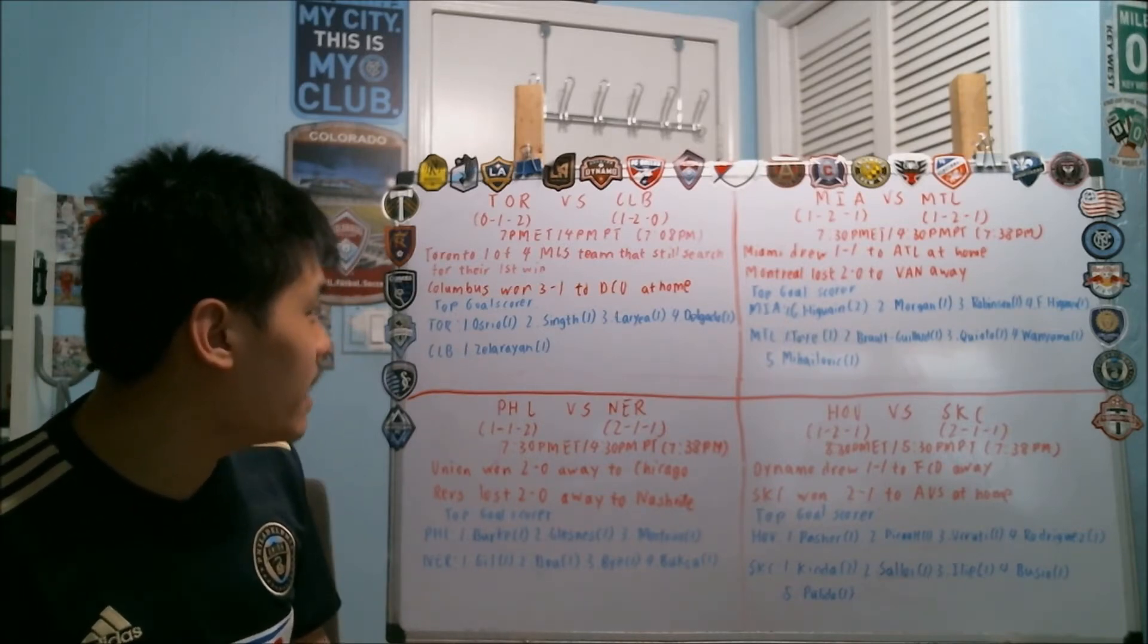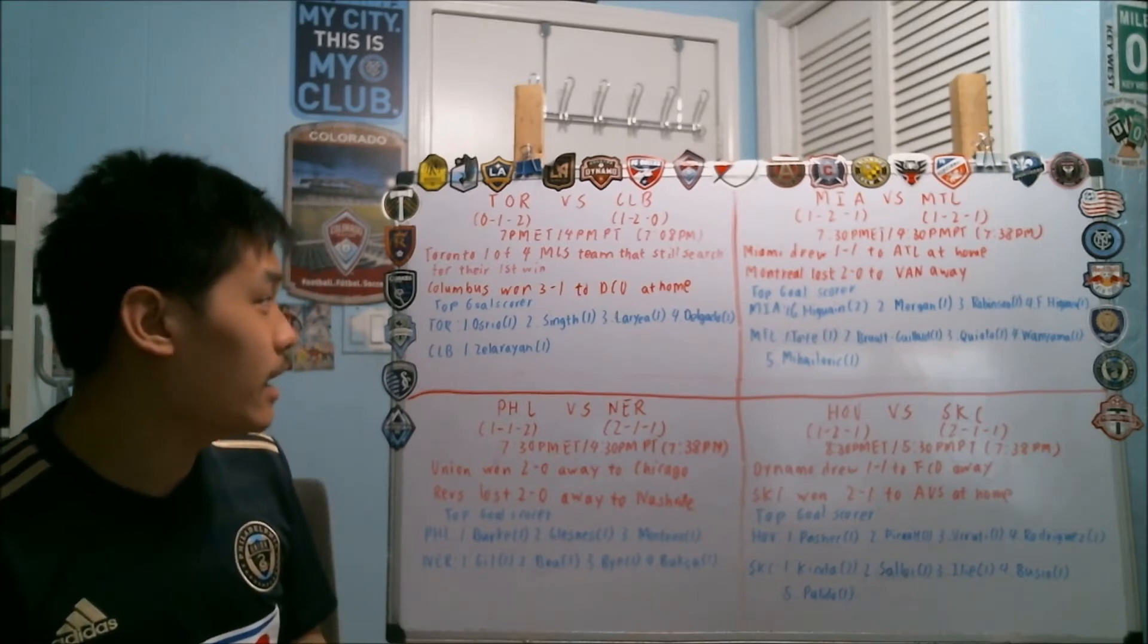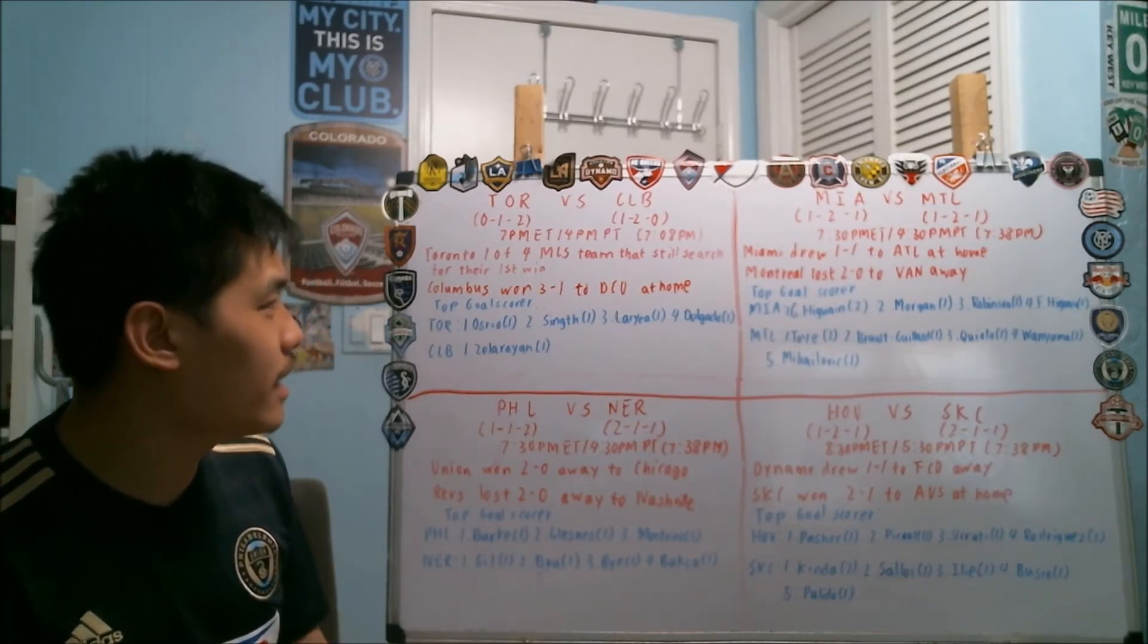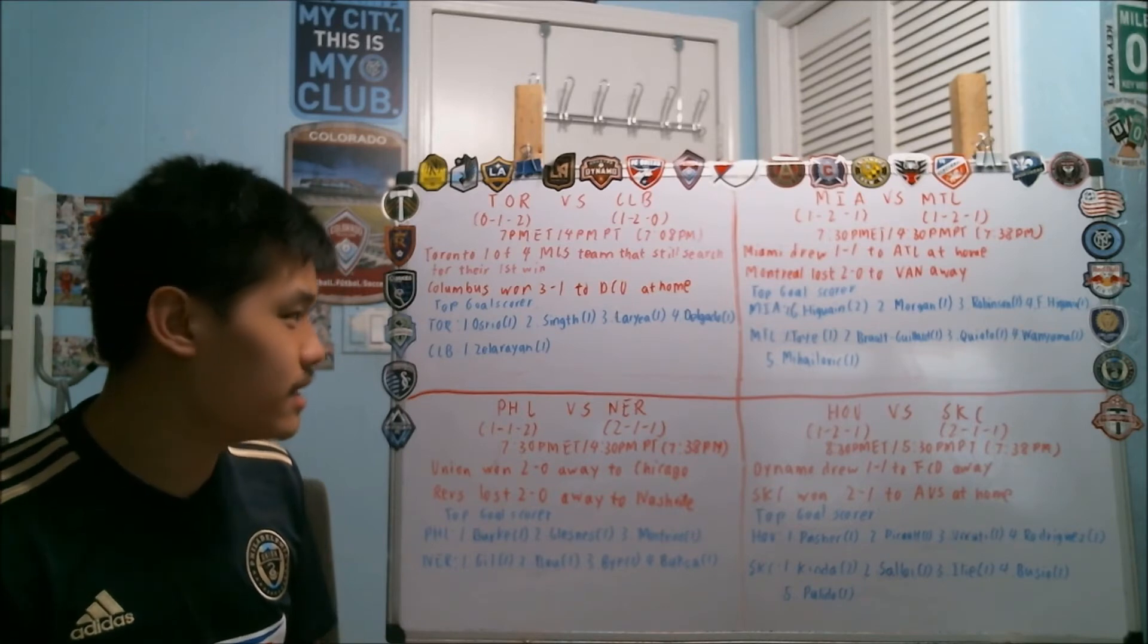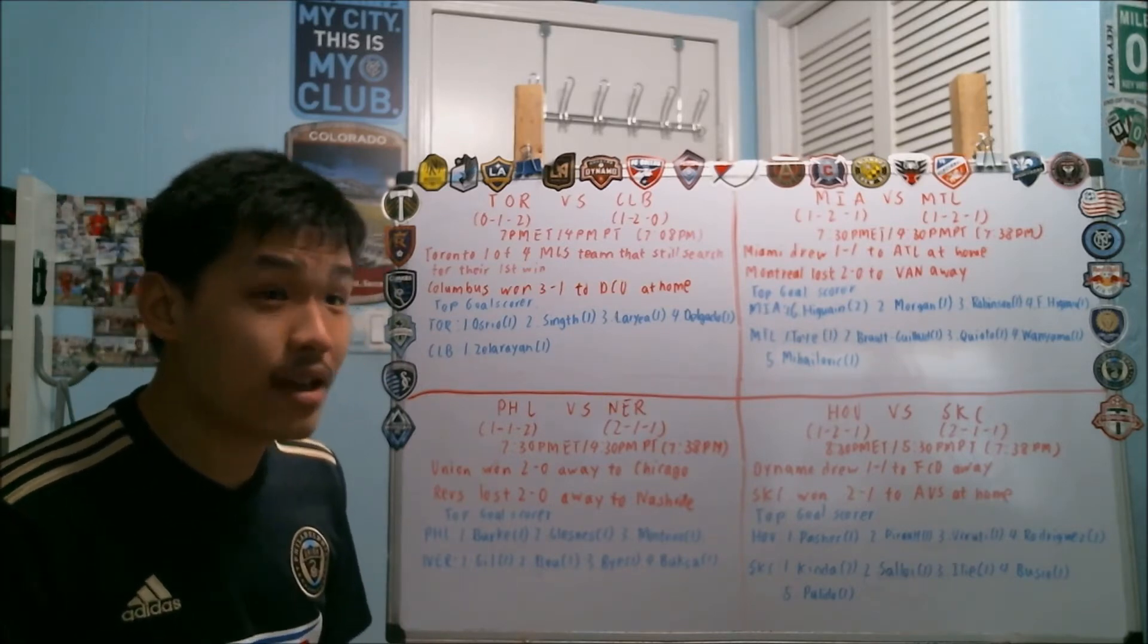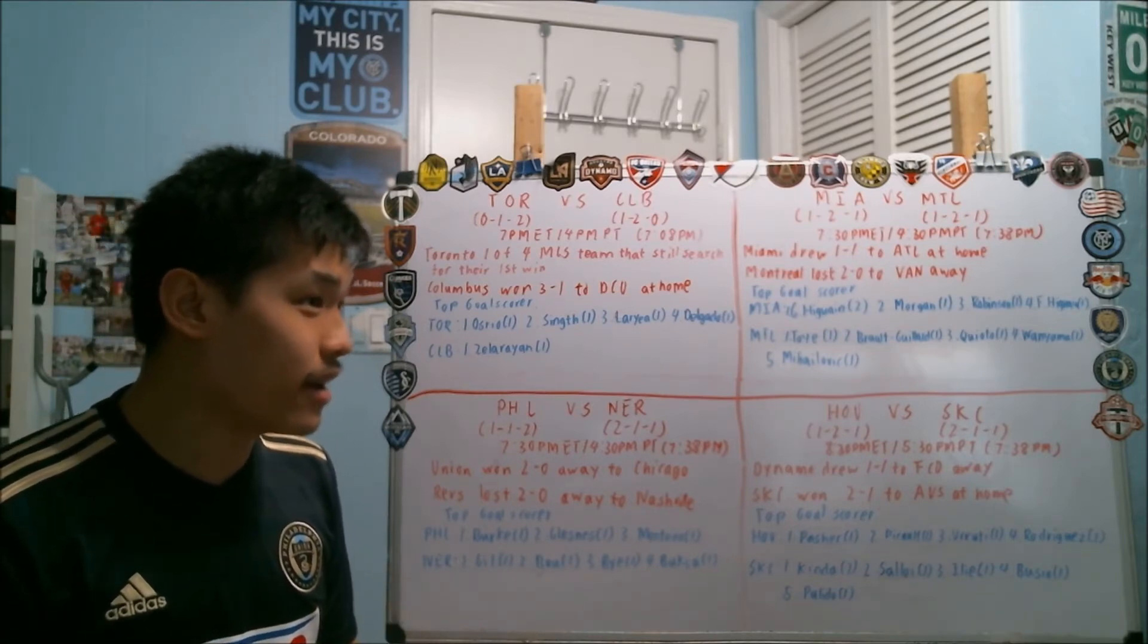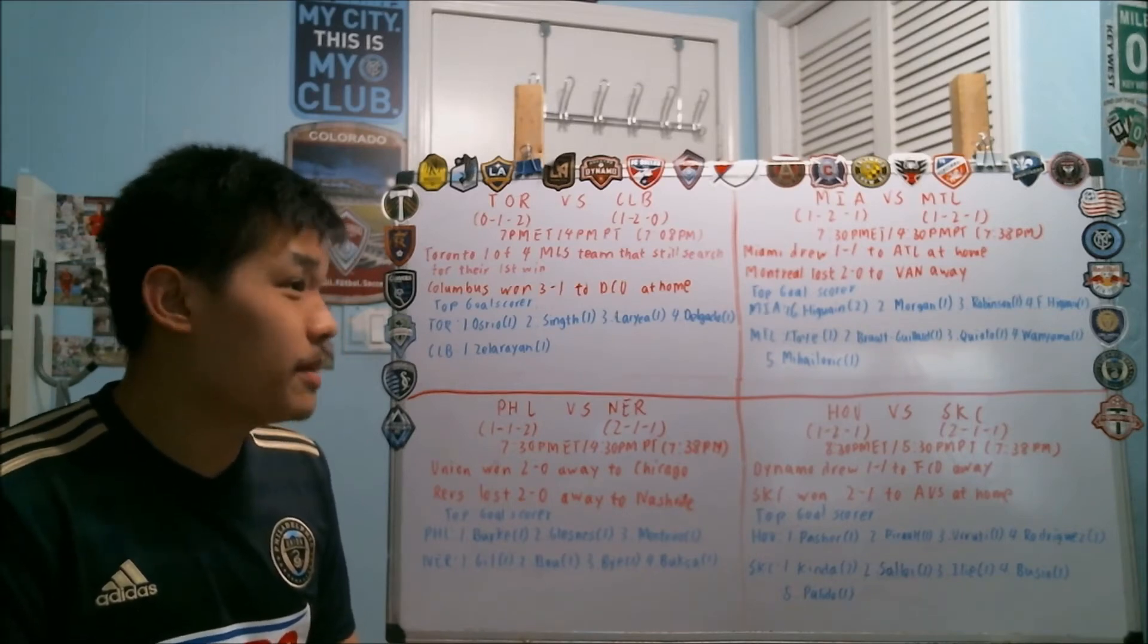In this game, it's going to start at 7 p.m. Eastern, 4 p.m. Pacific. The actual kickoff time is at 7:08 p.m. local time. This game also is going to be taking place at Explorer Stadium in Orlando. Toronto is one of four MLS teams that are still searching for their first win of the season with a record of 0-1-2. Columbus got their first win last week as they won 3-1 against DC United at home to improve their record to 1-2-0.